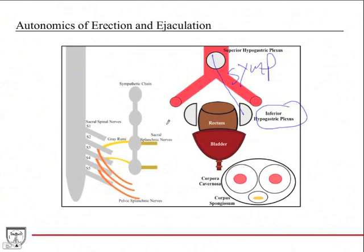You have parasympathetic fibers which come from the sacral spinal cord, and they travel through these pelvic splanchnic nerves here and make their way up here. Remember, sympathetics can also come through the sympathetic chain and then through the sacral splanchnic nerves as well.